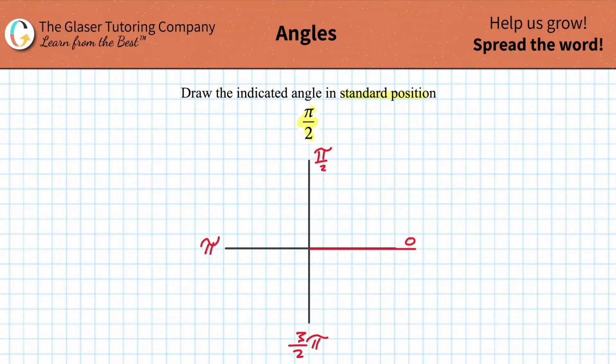In other words, we keep increasing by π/2. We start at zero, π/2, π, 3π/2. And as we rotate all the way back around, this would be 2π if we made a complete circle.